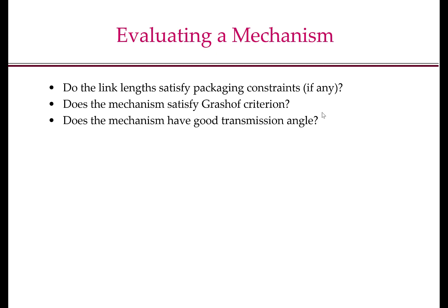One such question of interest is: does the mechanism have a good transmission angle? Let us recall what the transmission angle is. This is a four-bar mechanism with input angle theta 2. The transmission angle is the minimum acute angle mu between the coupler and the output link. As the angle theta 2 varies, the angle between the coupler and the output link changes, and the minimum of those angles is the transmission angle mu.